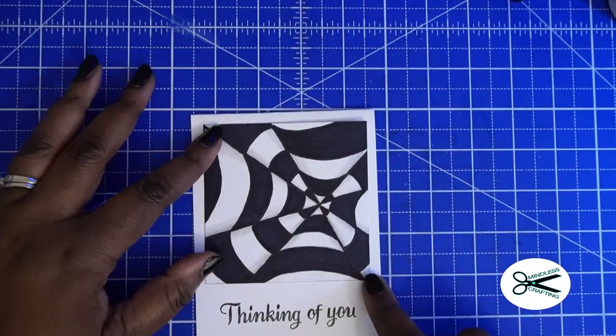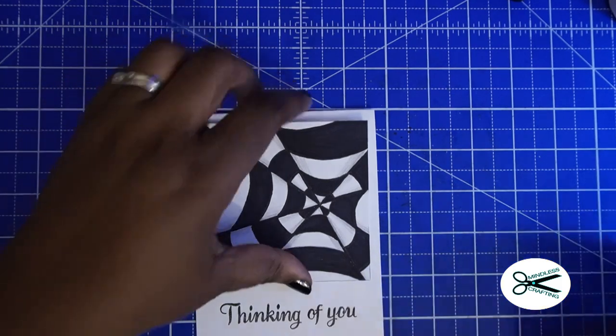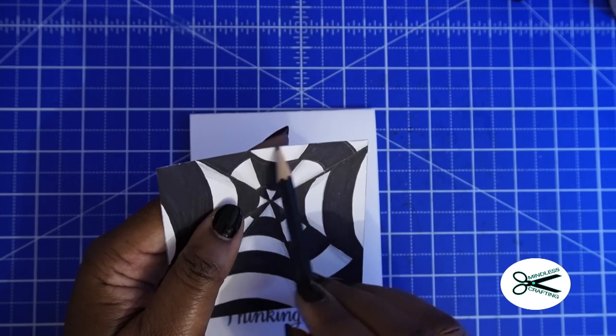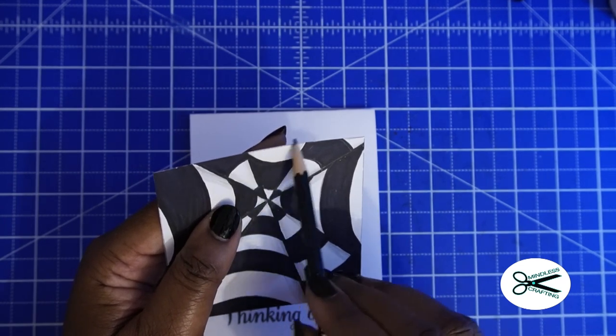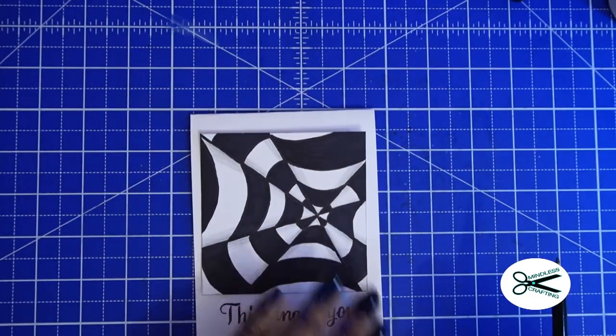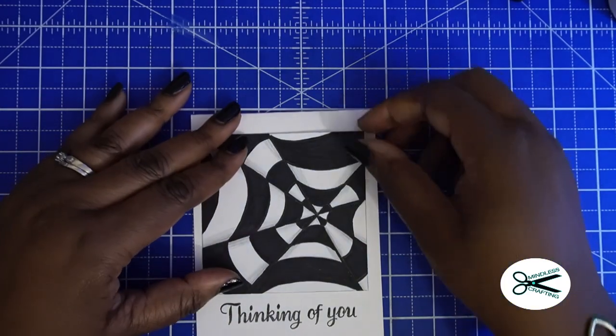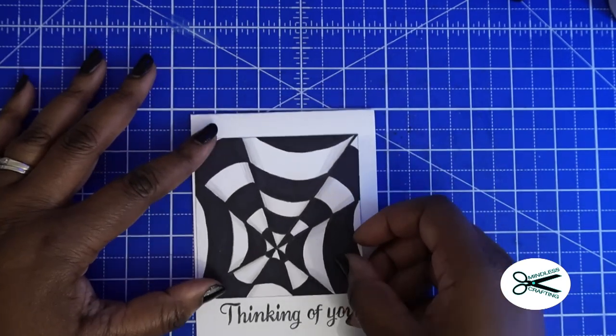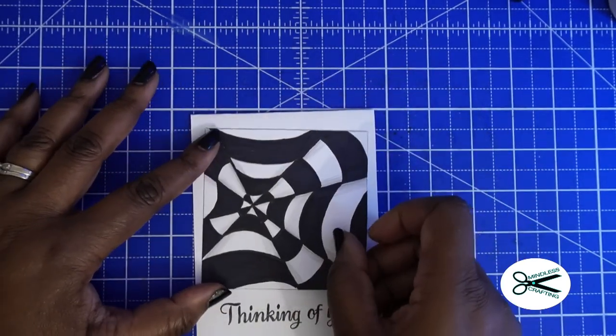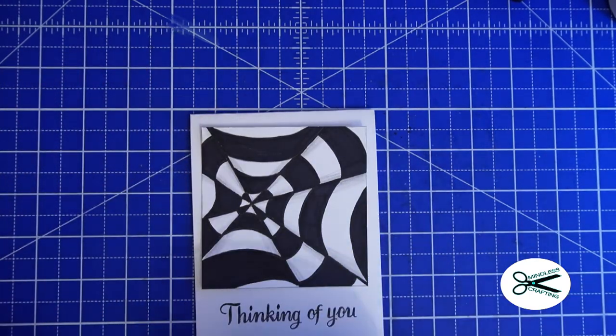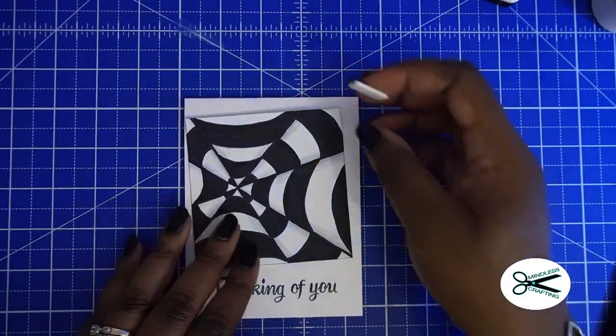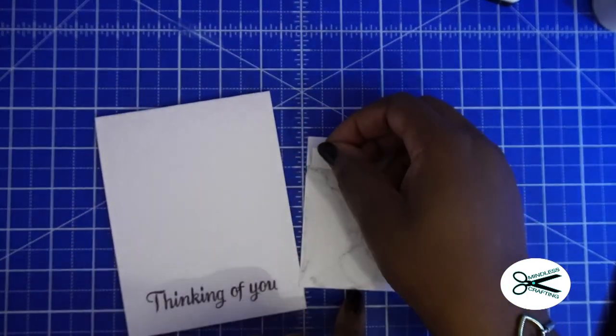Okay, so I am using our sentiments stamp set from our Mindless Crafting store. I will leave the link for you in case you want to get this. This has all the different occasions on it and I am going to use thinking of you, and I am going to stamp that at the bottom before I put this on. Okay, so right here, this is going to fit right there, so I want my sentiment to kind of line up right around here. Okay, I'm just going to eyeball it. Okay, look how pretty that is. And don't forget we actually have our intense black Mindless Crafting ink as well in case you're looking for a good stamping ink. Okay, okay, and I'm going to put this right here or if I wanted to it could be like this.